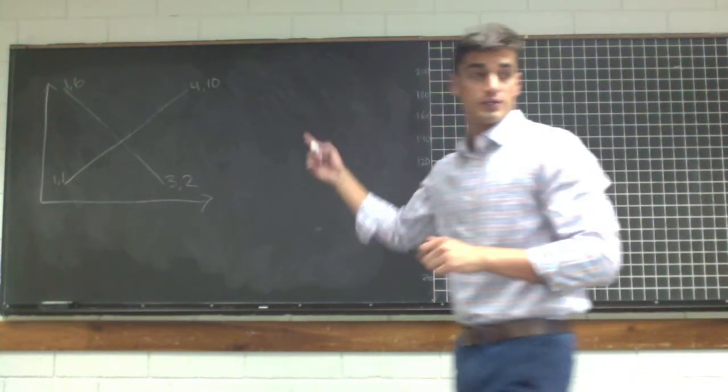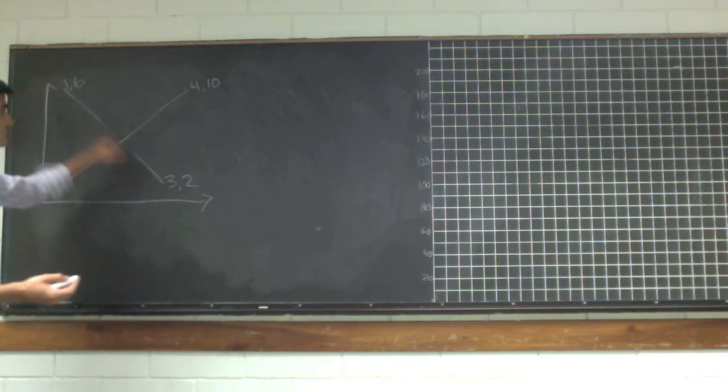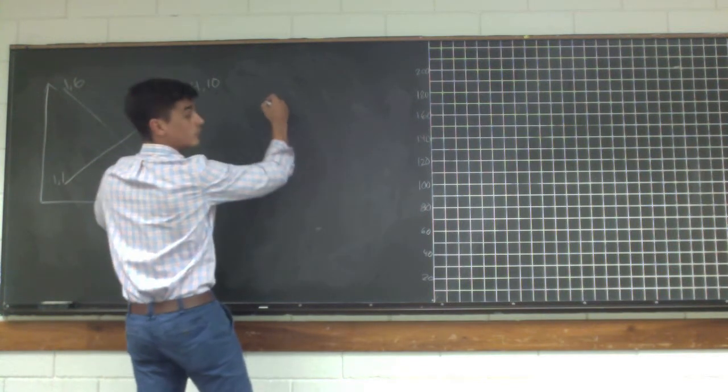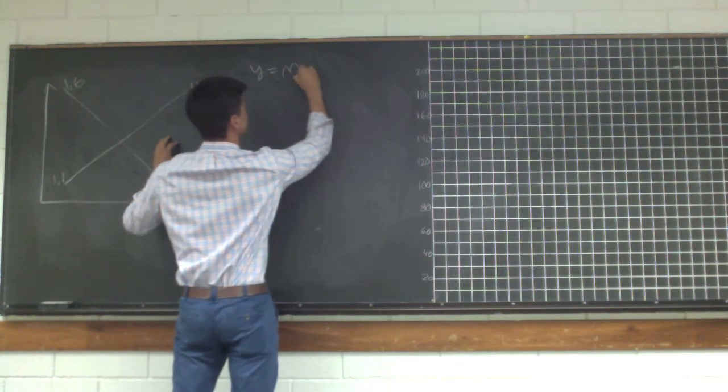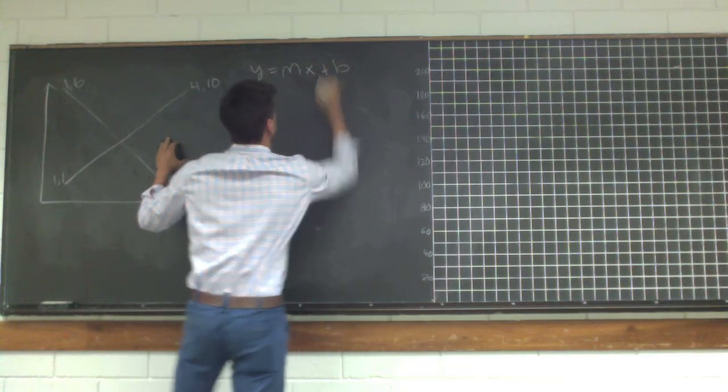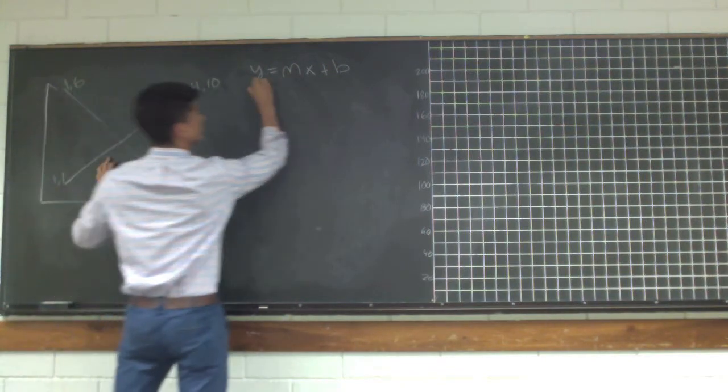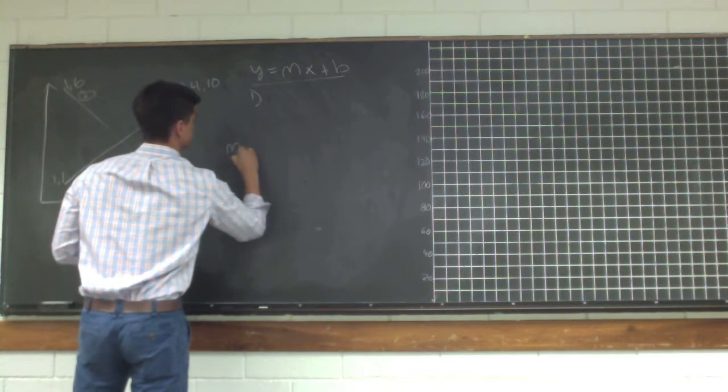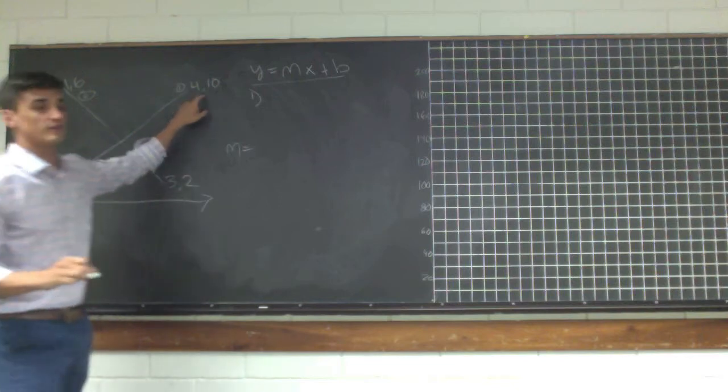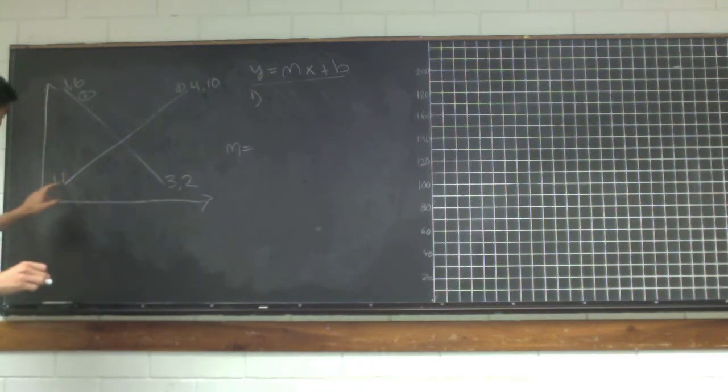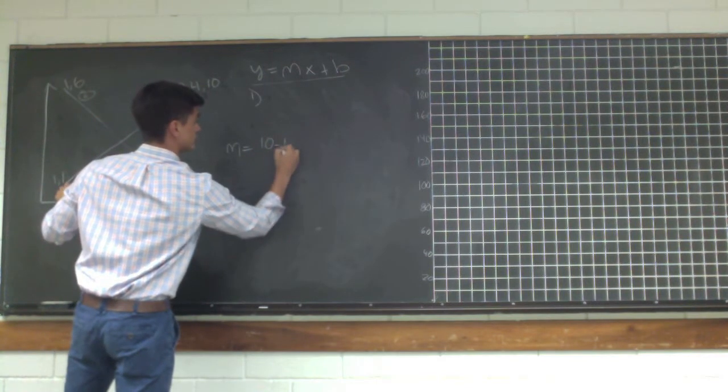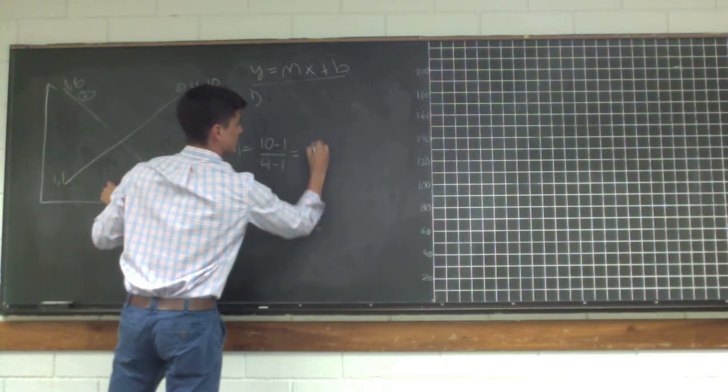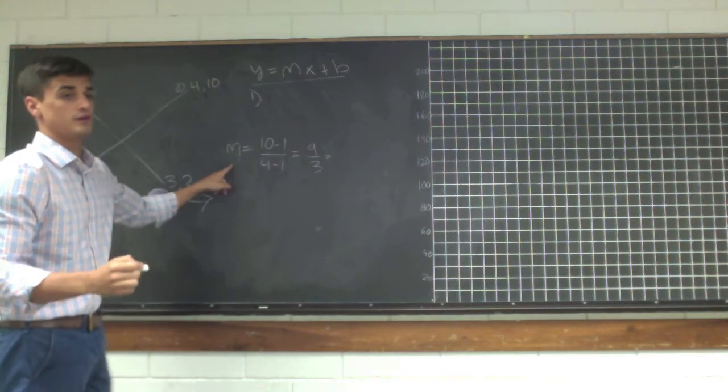And using these points, we know how to use slope-intercept form to find what the equation of this line is, correct? So what's slope-intercept form one more time? y equals mx plus b. Okay, so for the first one, let's just solve it right off the bat. This is line 1, this will be line 2. For line 1, what is the slope? How do we solve this again? Take y2 minus y1, so that's 10 minus 1 over 4 minus 1, correct. It's going to give us 9 over 3, so that will give us a slope of 3. Positive 3, correct.